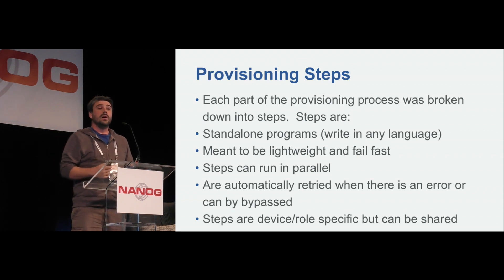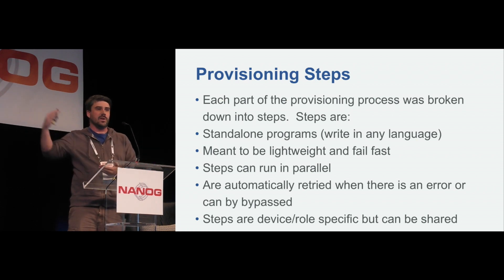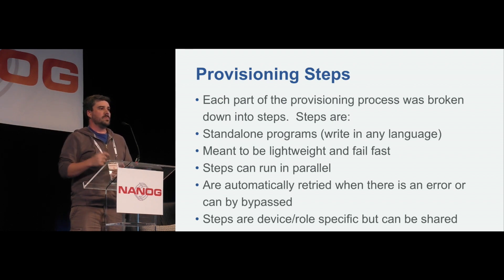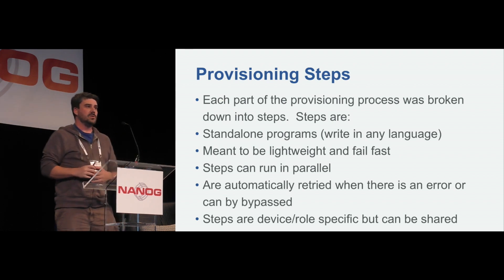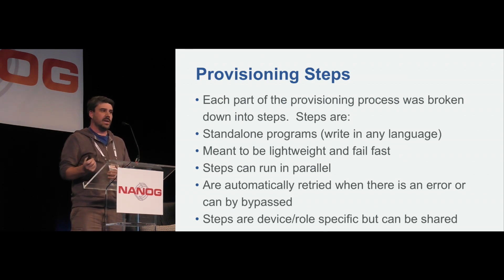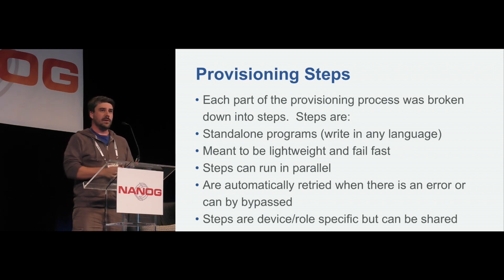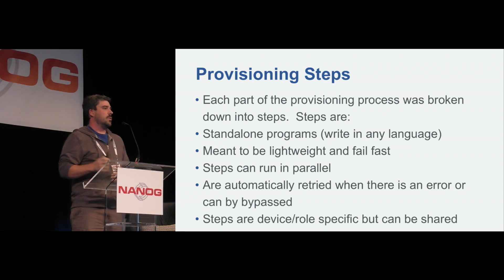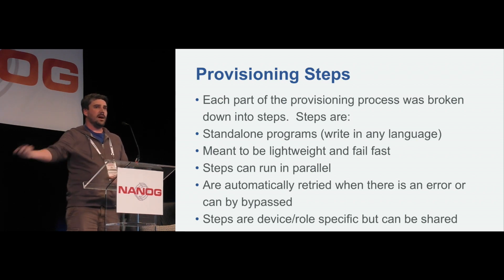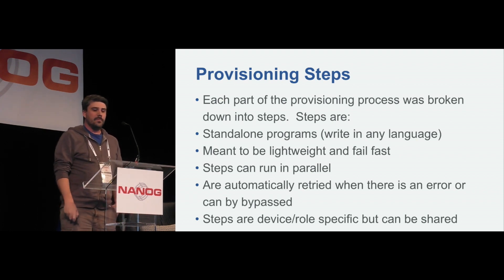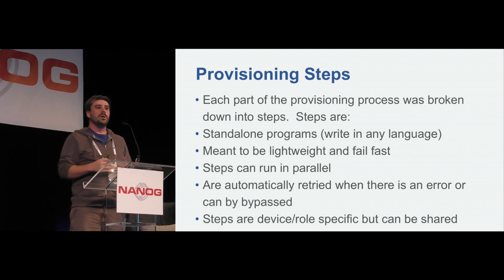We wanted steps to fail really fast — if there's a problem, the program exits with a non-zero error code and the system can automatically restart. Previously we'd fail an entire provisioning job because one small thing was wrong, like a power supply not plugged in discovered only at the very end of the job. Now we can retry power supply checks over and over again, or bypass a step which opens a ticket in our ticketing system for someone to investigate — while still allowing servers to be provisioned. We can also define which steps run based on the device role or hardware model.